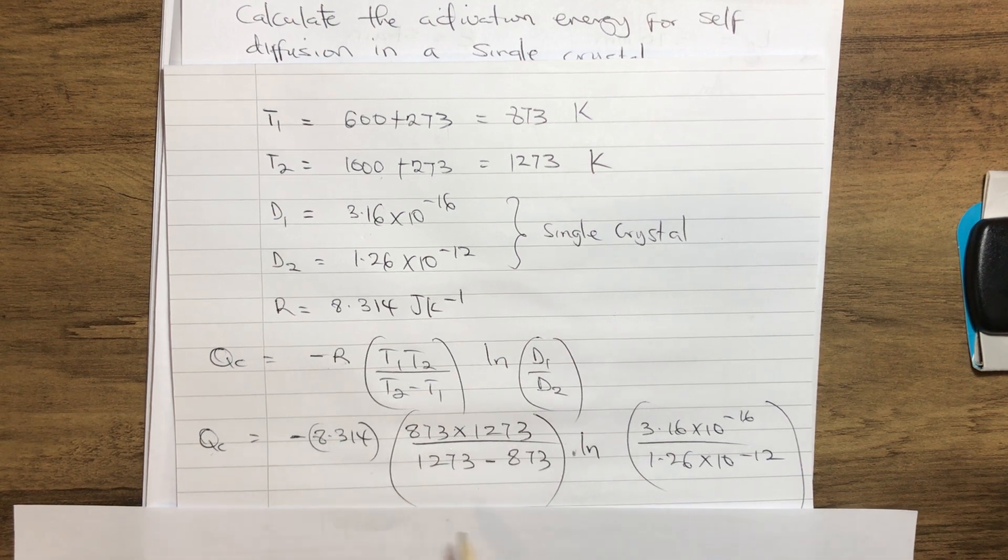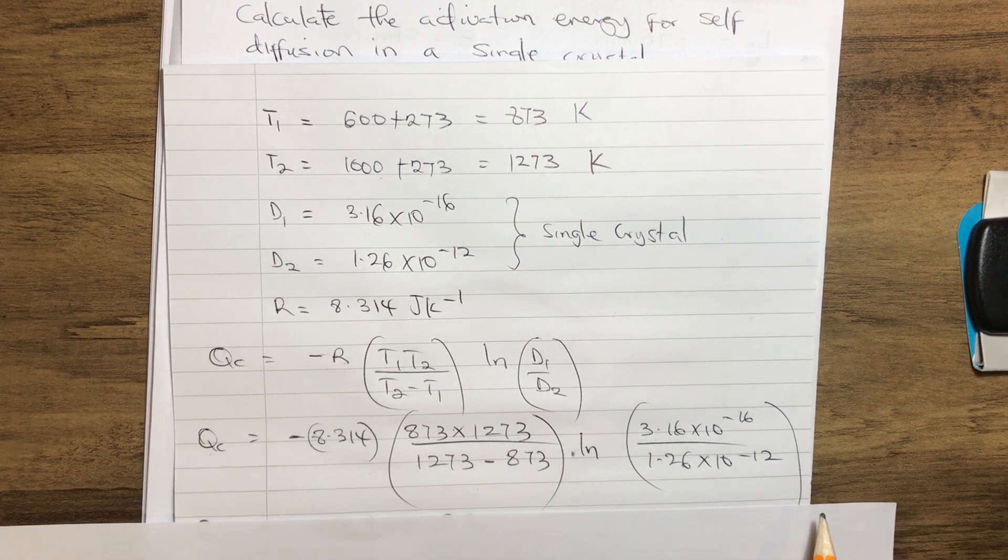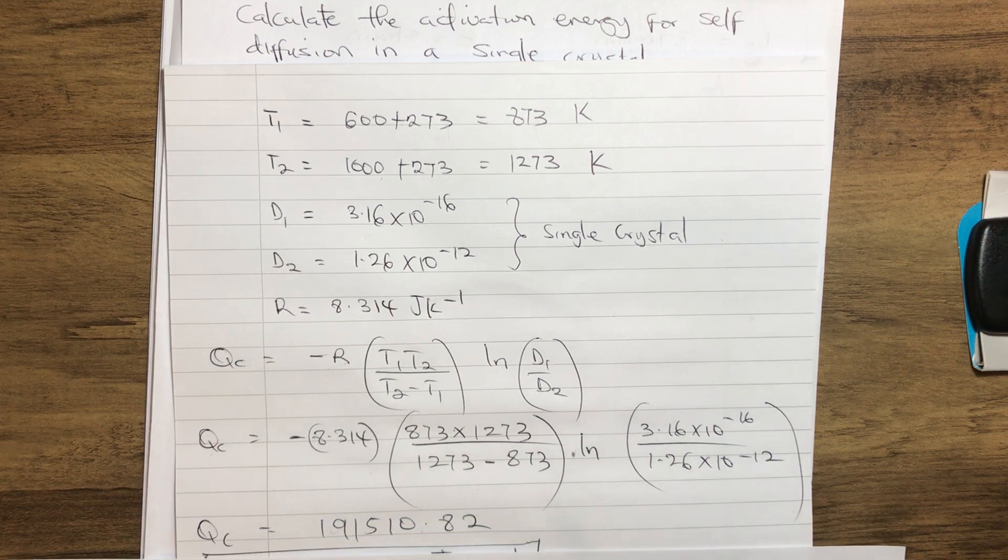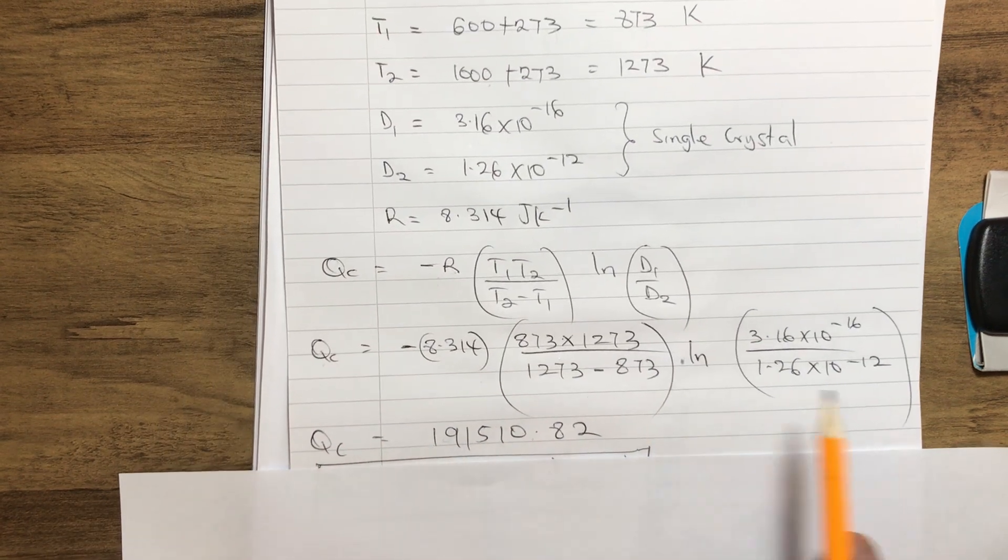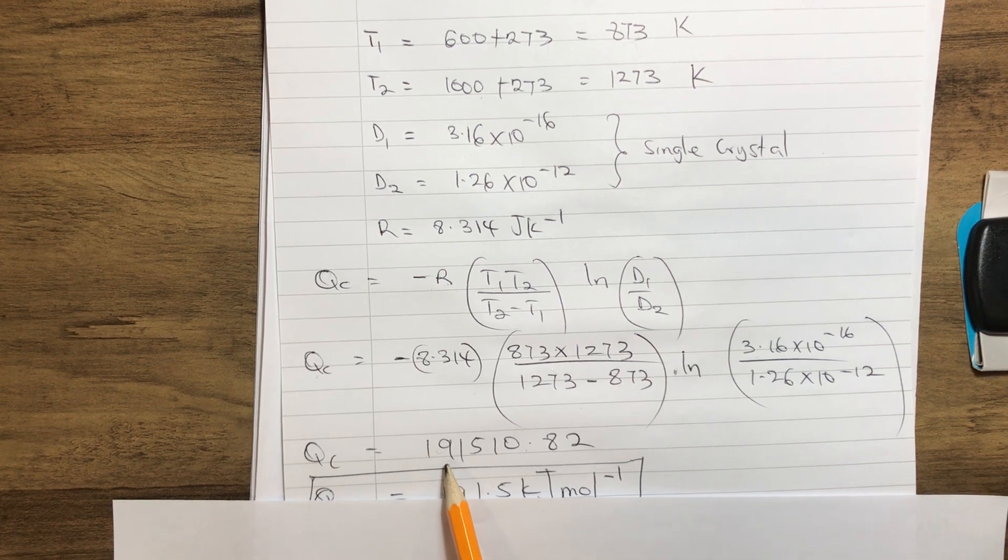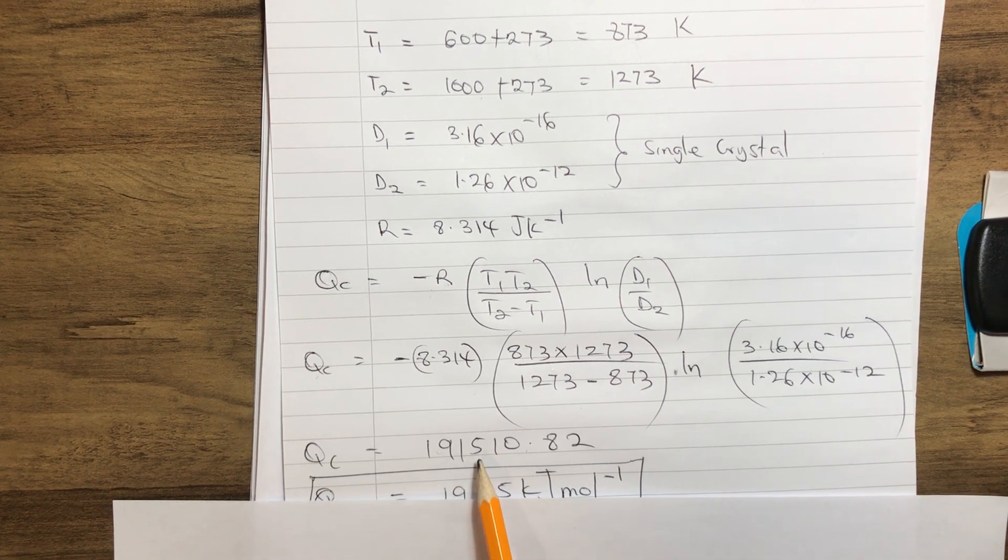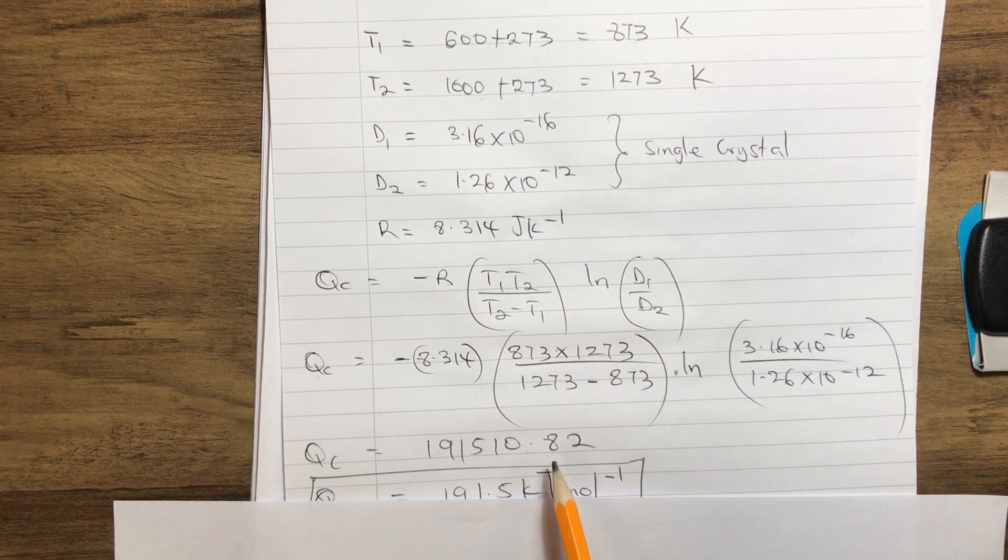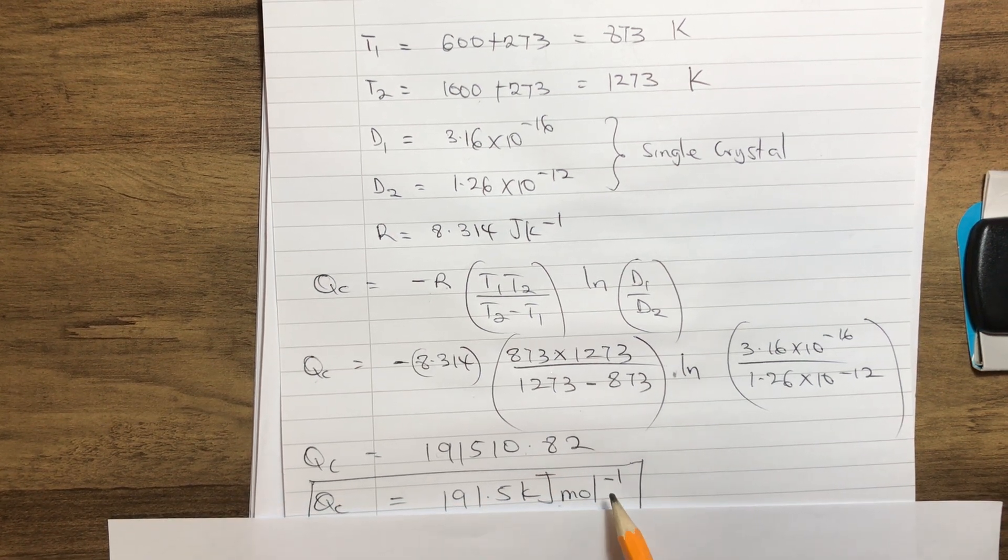Now we can calculate all these, which gives us our Qc, which is 191,510.82 joules per mole.